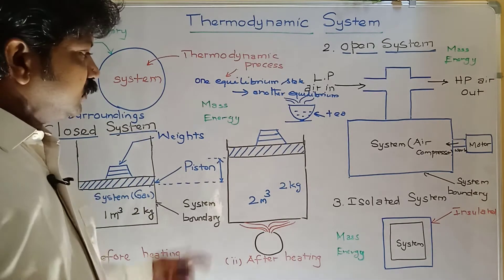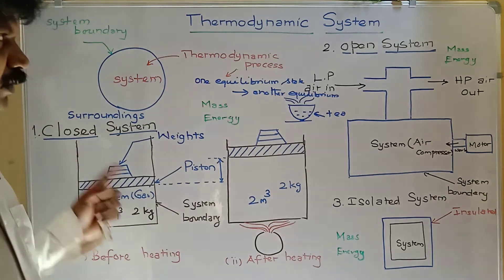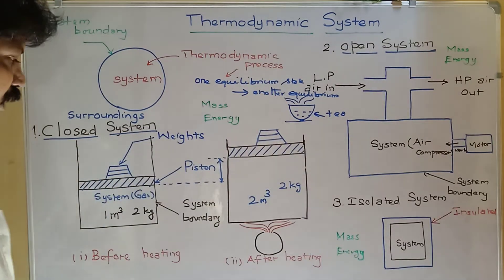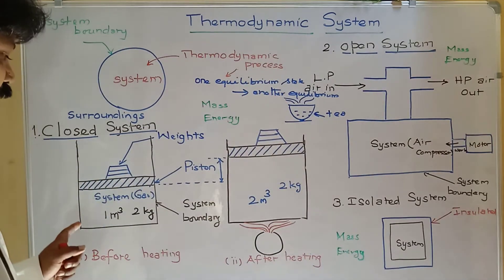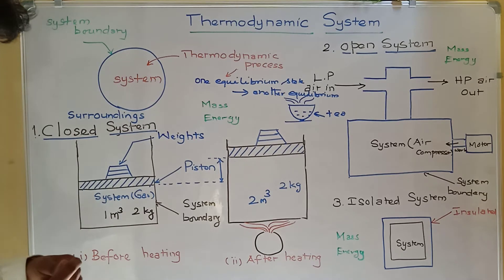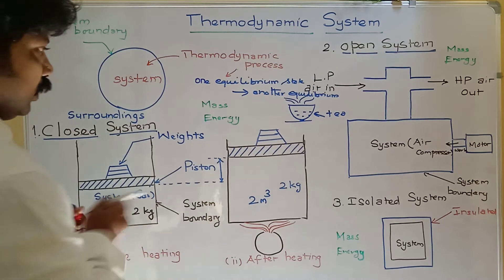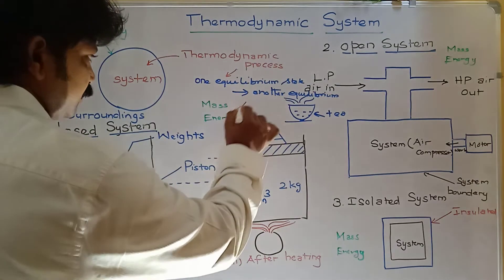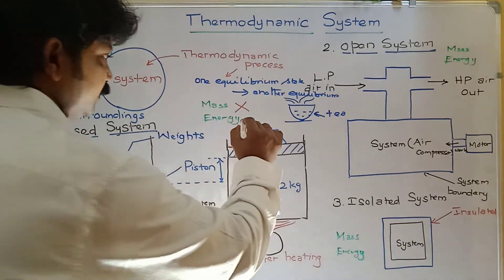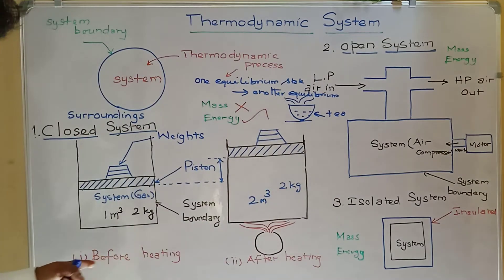Thermodynamic systems are classified into three types: closed system, open system, and isolated system. In a closed system, no mass transfer takes place — only energy transfer occurs.